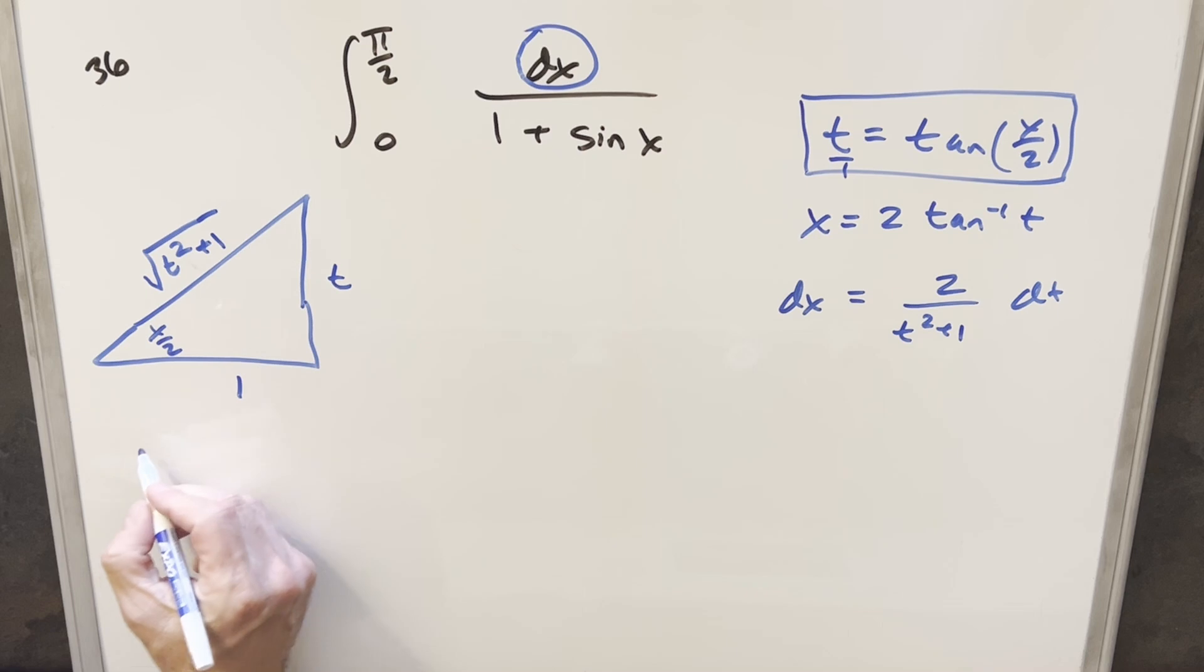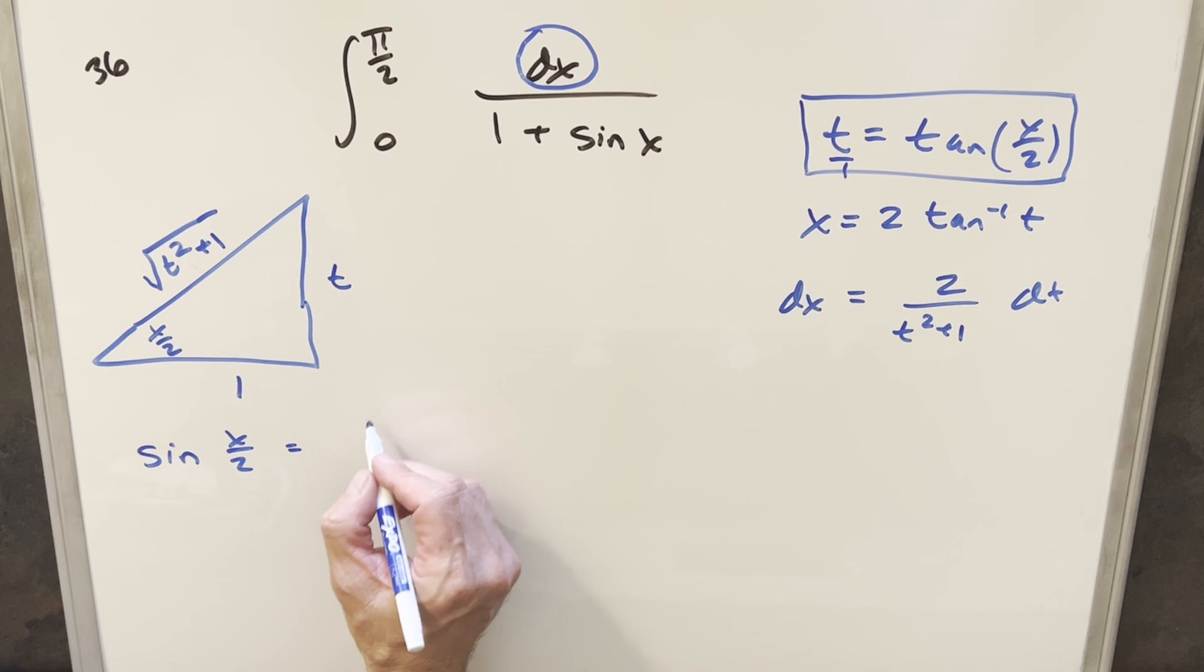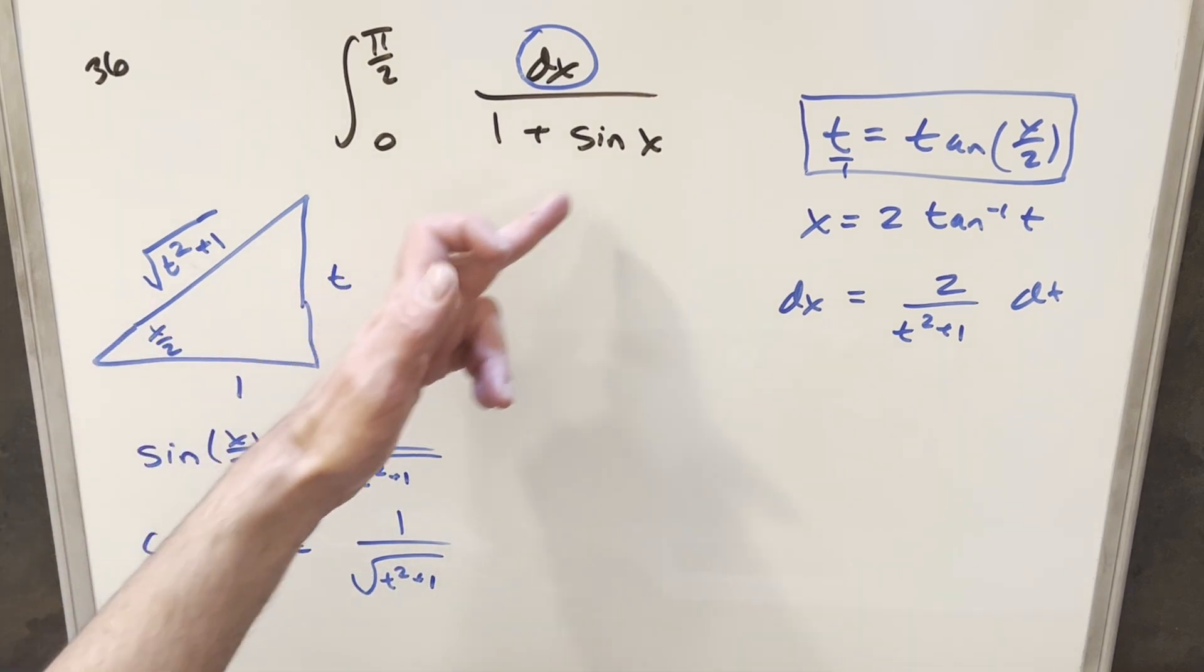But what this allows me to do is get some other values so we can find sin of x/2 because sine is going to be opposite over hypotenuse. So this is going to just be t over square root t²+1. And then we can go ahead and get cosine as well while we're at it. So cosine adjacent over hypotenuse, that's just going to be 1 over square root t²+1.